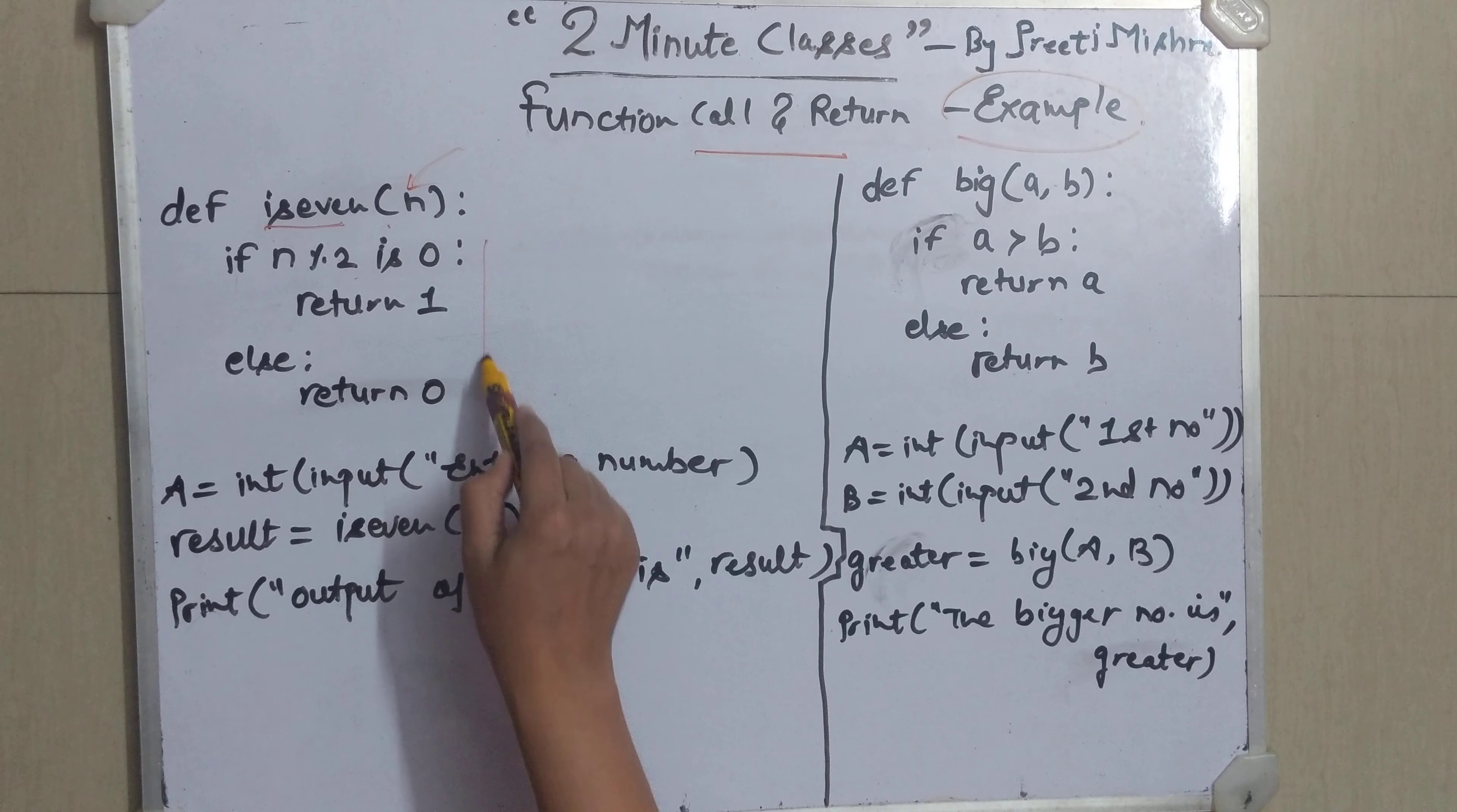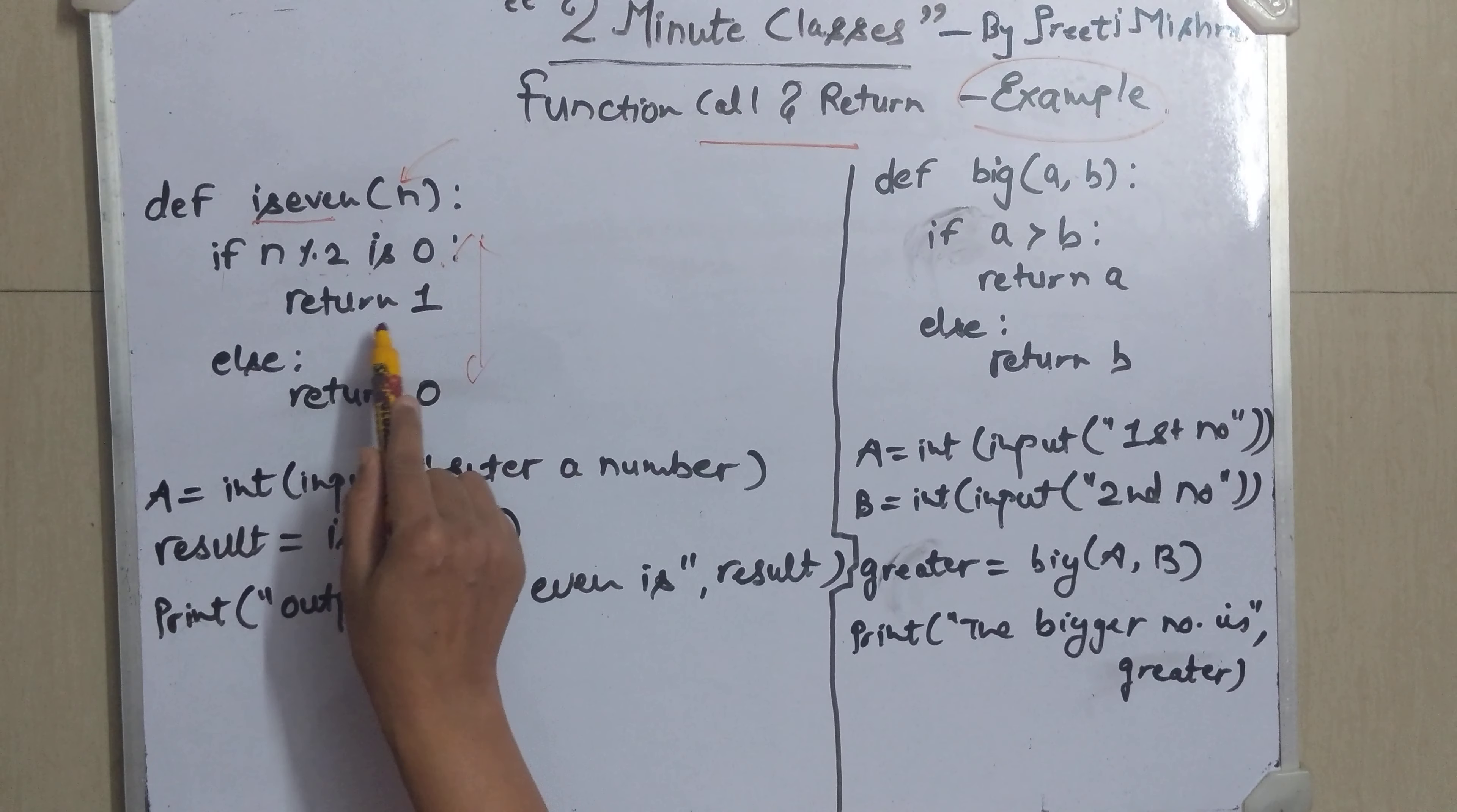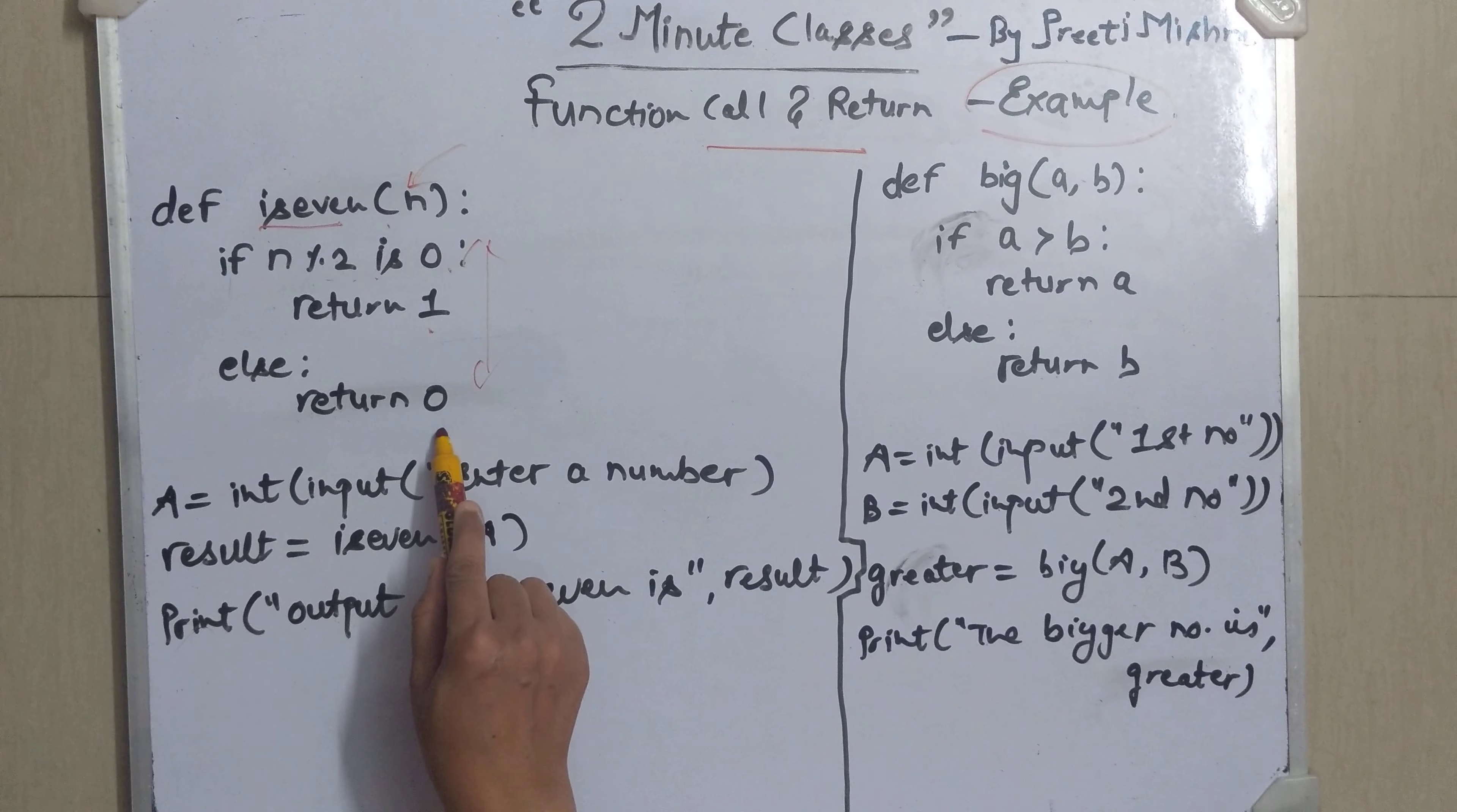And over here I have written the logic for finding even which we already know. That is I am dividing the number by 2. If the result is 0 then I will return 1 otherwise I will return 0.